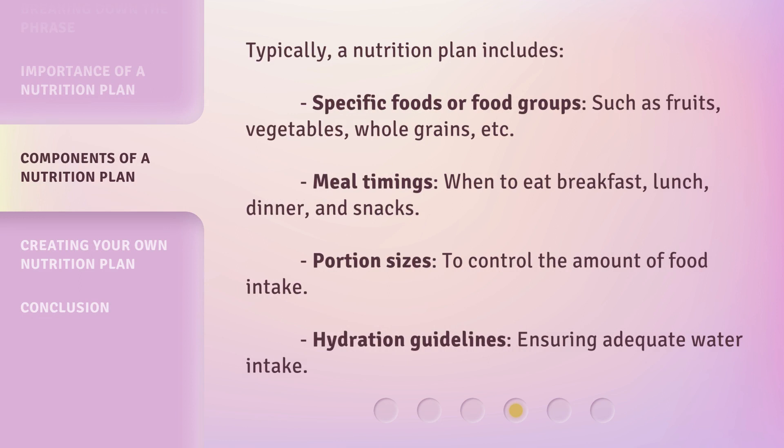Typically, a nutrition plan includes specific foods or food groups, such as fruits, vegetables, whole grains, etc. It also covers meal timings — when to eat breakfast, lunch, dinner, and snacks — portion sizes to control the amount of food intake, and hydration guidelines to ensure adequate water intake.